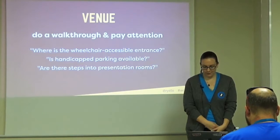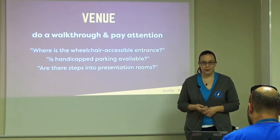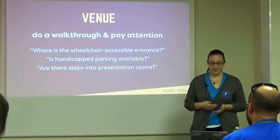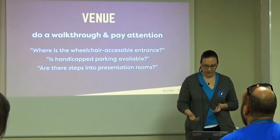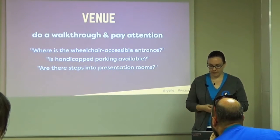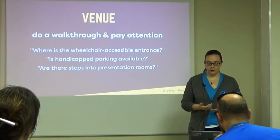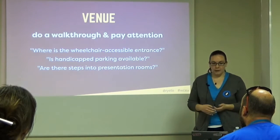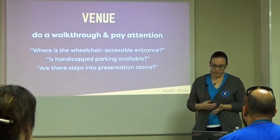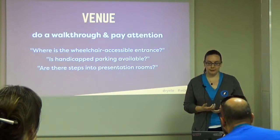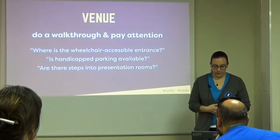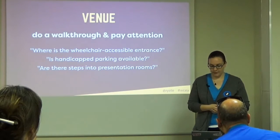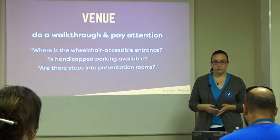Think about these questions and try to imagine people's experiences. Where is the wheelchair accessible entrance? Is there one? Is it in the back of the building through a sketchy alley near the trash? Does it have heavy non-automatic doors? If it's a separate entrance, you'll want to make sure people coming in aren't lost, which might mean assigning a volunteer to that door all day. Is there handicap parking available? See if you can work with your venue to offer closer parking permits. Are there steps into the presentation rooms? Even just one can be a barrier to wheelchair users. If there's not a wheelchair accessible entrance, try looking for another venue.